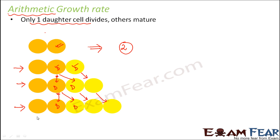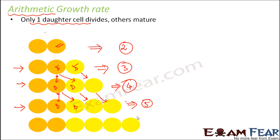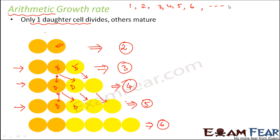At any one time, it is only one daughter cell that divides, not both. Looking at the process: initially you have two cells, in the next step three cells, then four, then five, then six. There is an increase of one cell at each step, so growth is increasing by one per step.